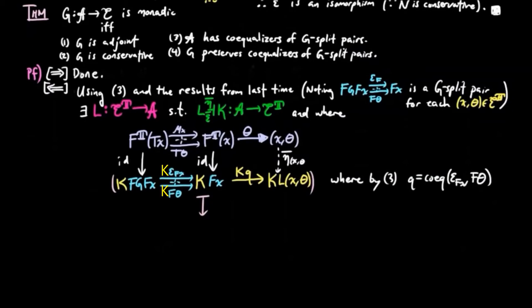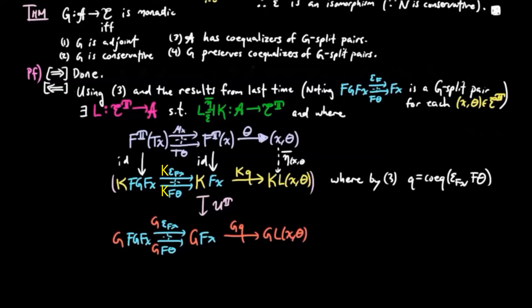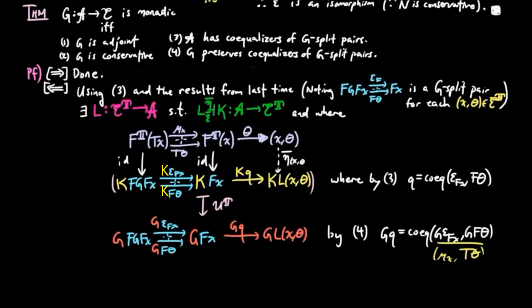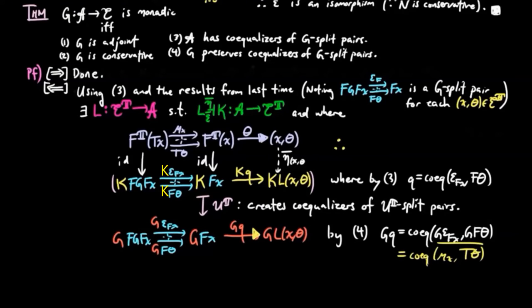We then apply the forgetful functor to the bottom row, giving us the following diagram in category E. Since UTK equals G, and G preserves coequalizers of G-split pairs by condition 4, GQ is the coequalizer of G epsilon FX and GF theta, which by the definition of the monad T equals mu X and T theta. But we have shown that the forgetful functor UT creates coequalizers of UT-split pairs. Therefore, KQ is the coequalizer of mu X and T theta in the Eilenberg-Moore category.